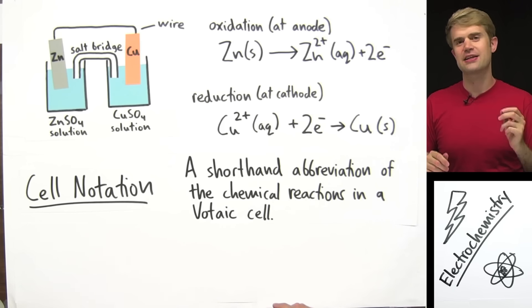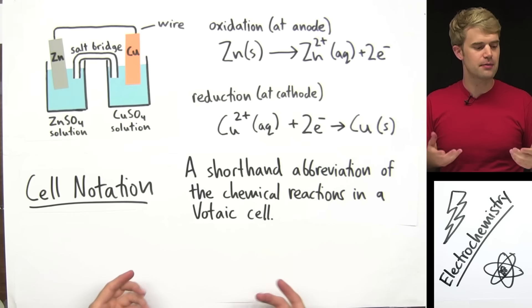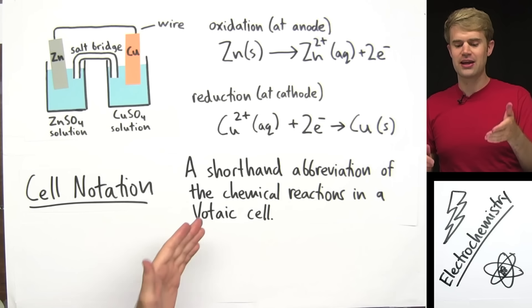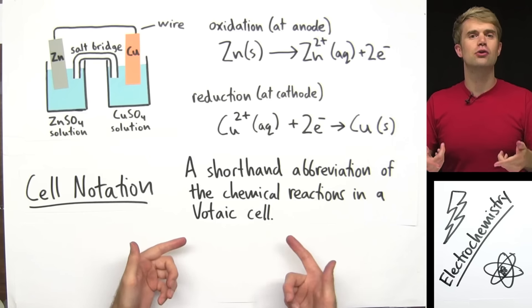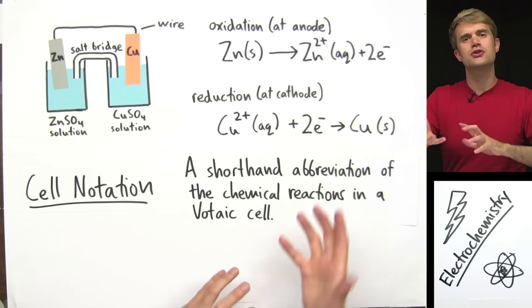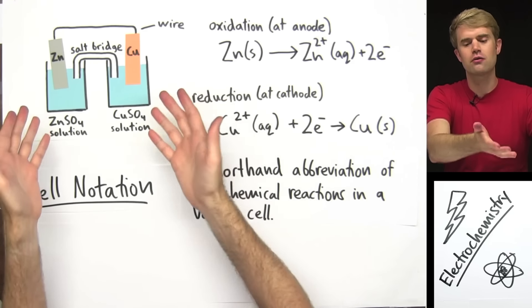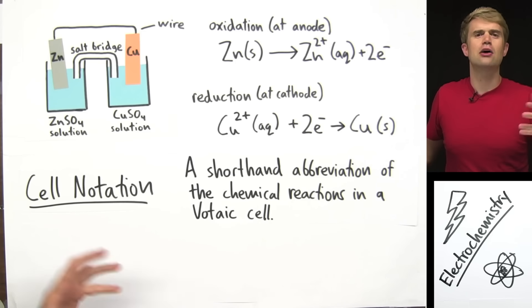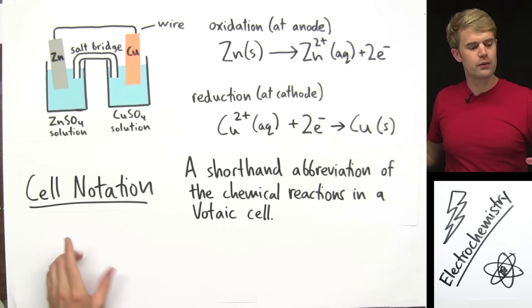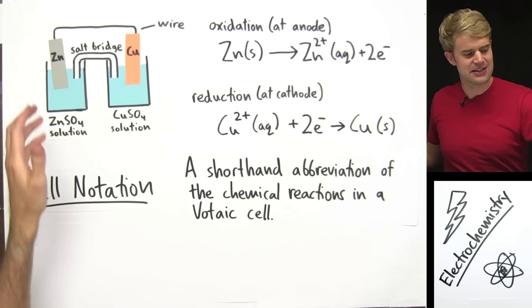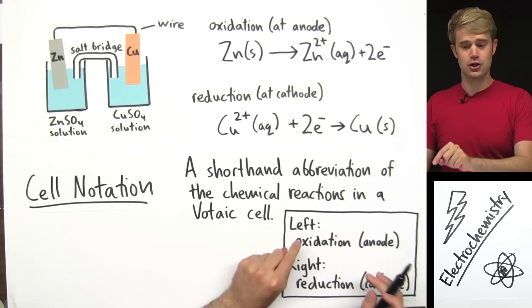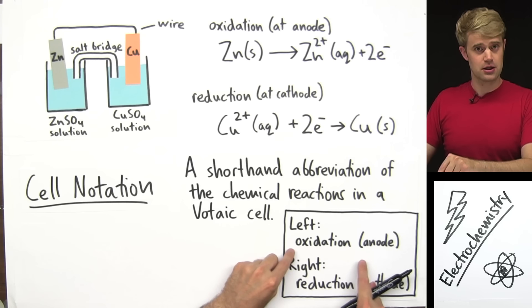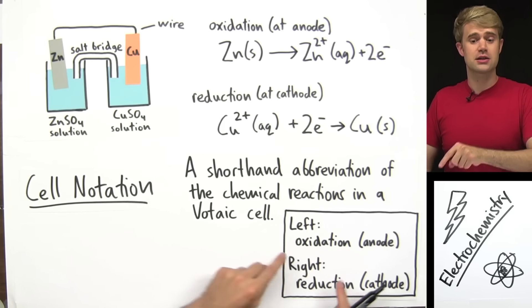When talking about voltaic cells, we're often asked to represent them in cell notation, which is a shorthand abbreviation of the chemical reactions in the voltaic cell. It's a way to show what's going on without drawing a picture of the whole thing. Cell notation is sometimes also referred to as a cell diagram. We start on the left with the oxidation process.